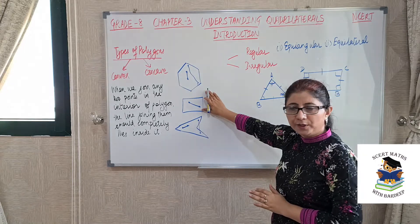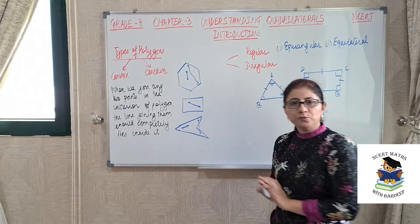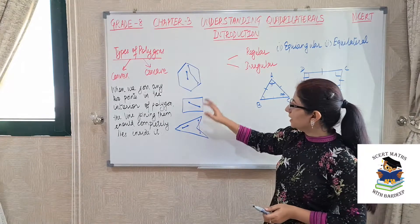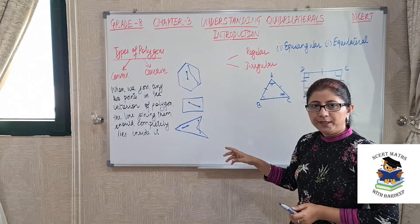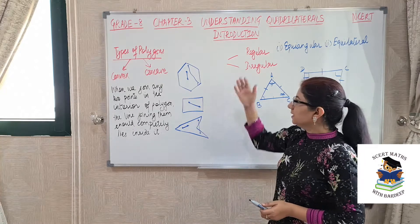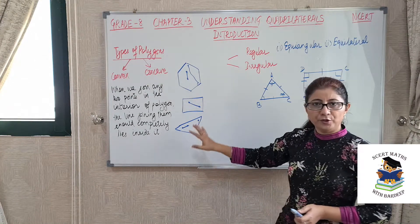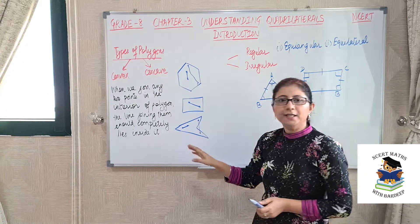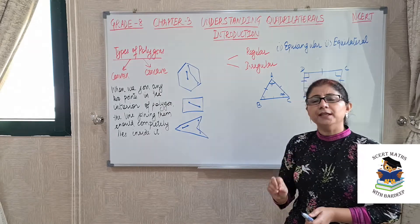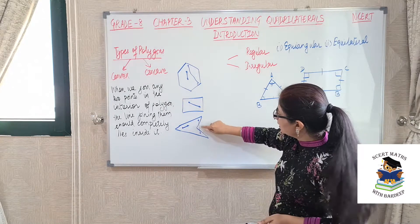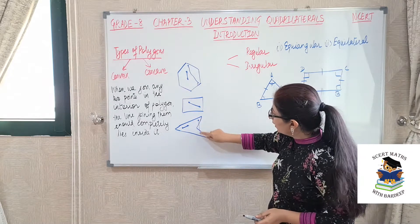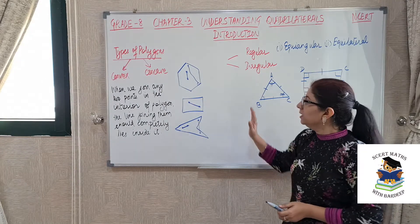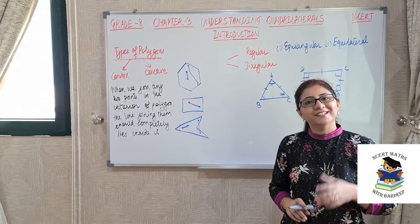Same is for this figure also. But now let's consider this polygon. According to the definition of polygon, all these figures have starting and ending point same and are made up of line segments, so they are polygons for sure. But if I take these two points here and join them, this lies in the interior. However, if I consider these other two points, when we join them, this portion of the line segment is in the exterior of your polygon. So now this polygon will be a concave polygon.